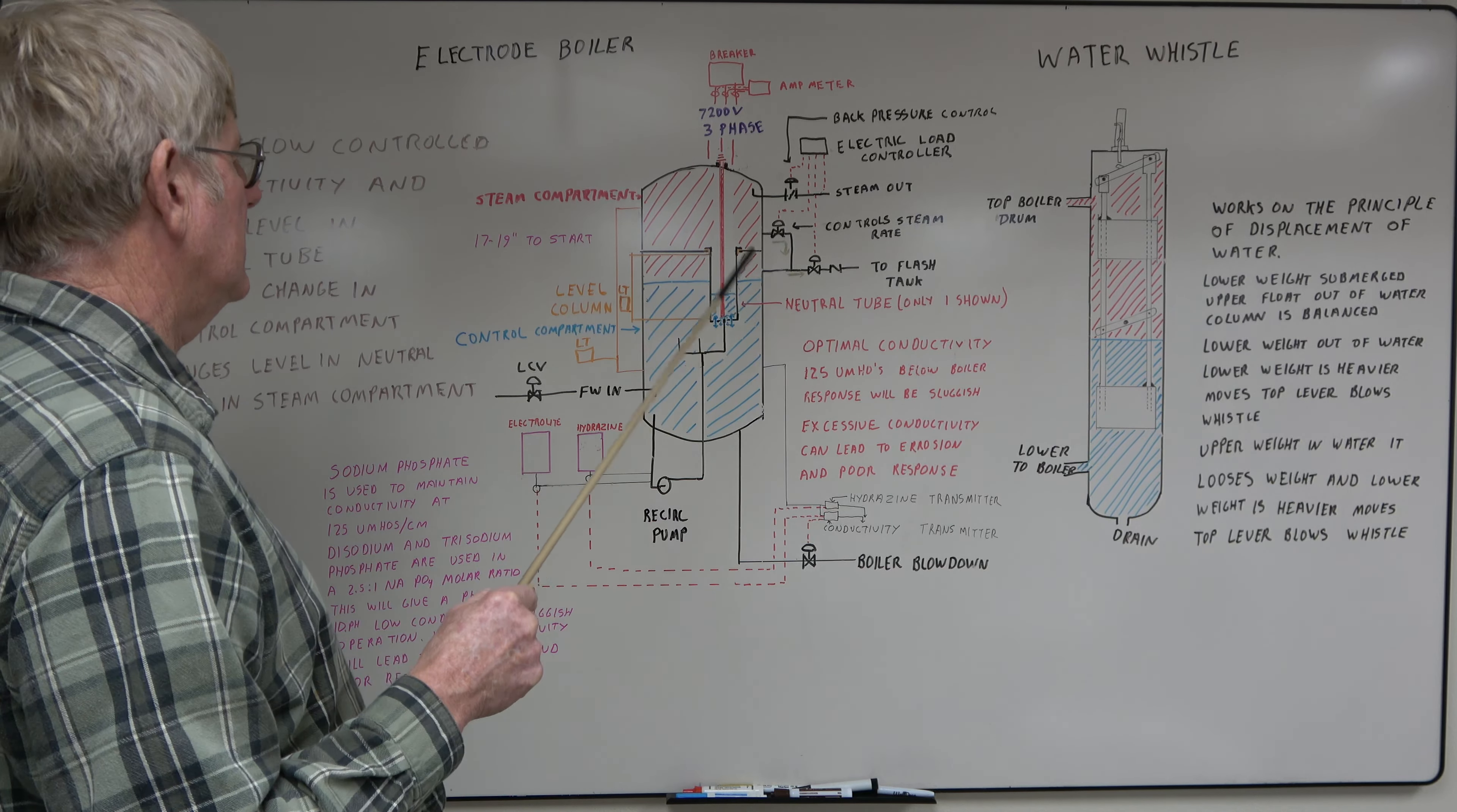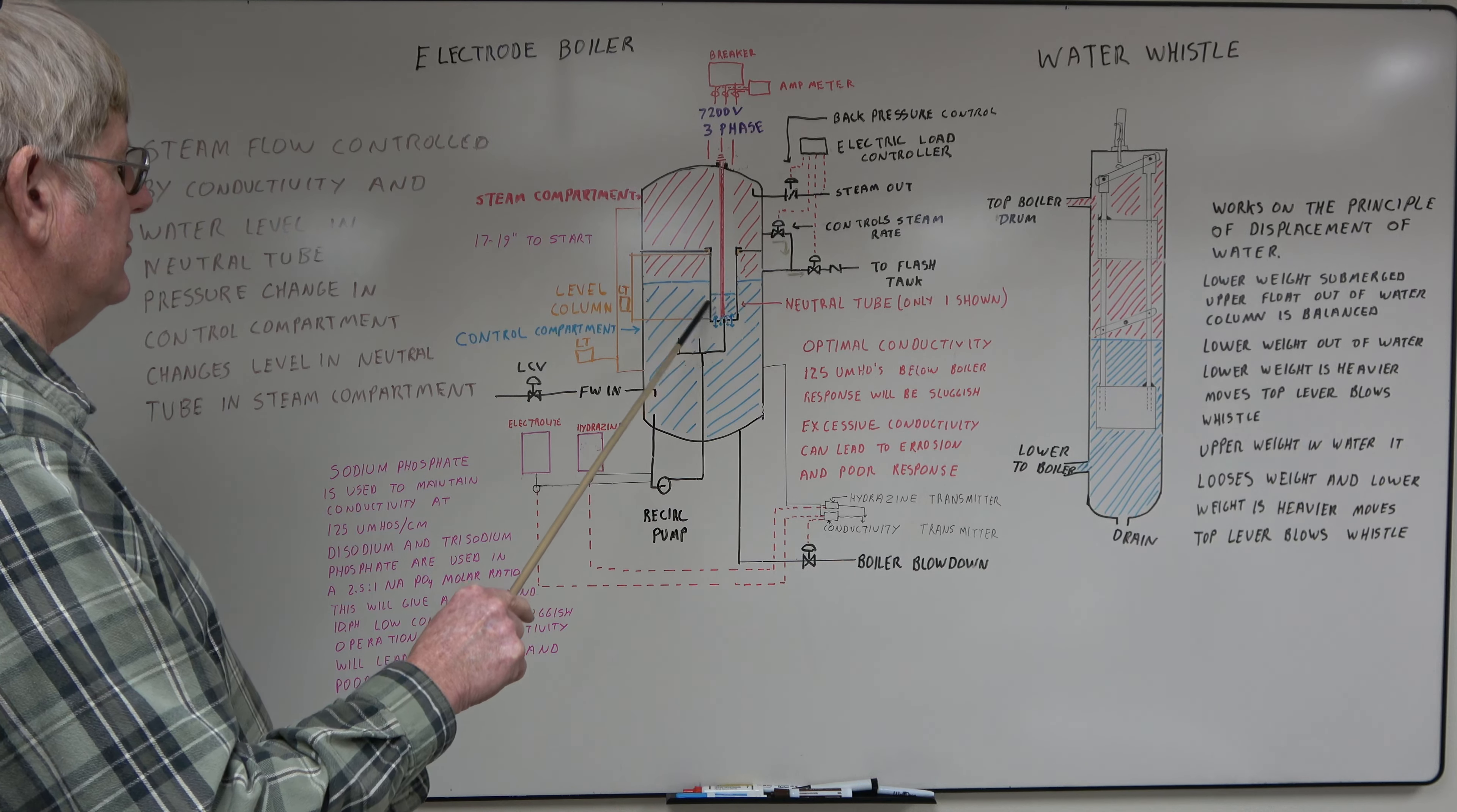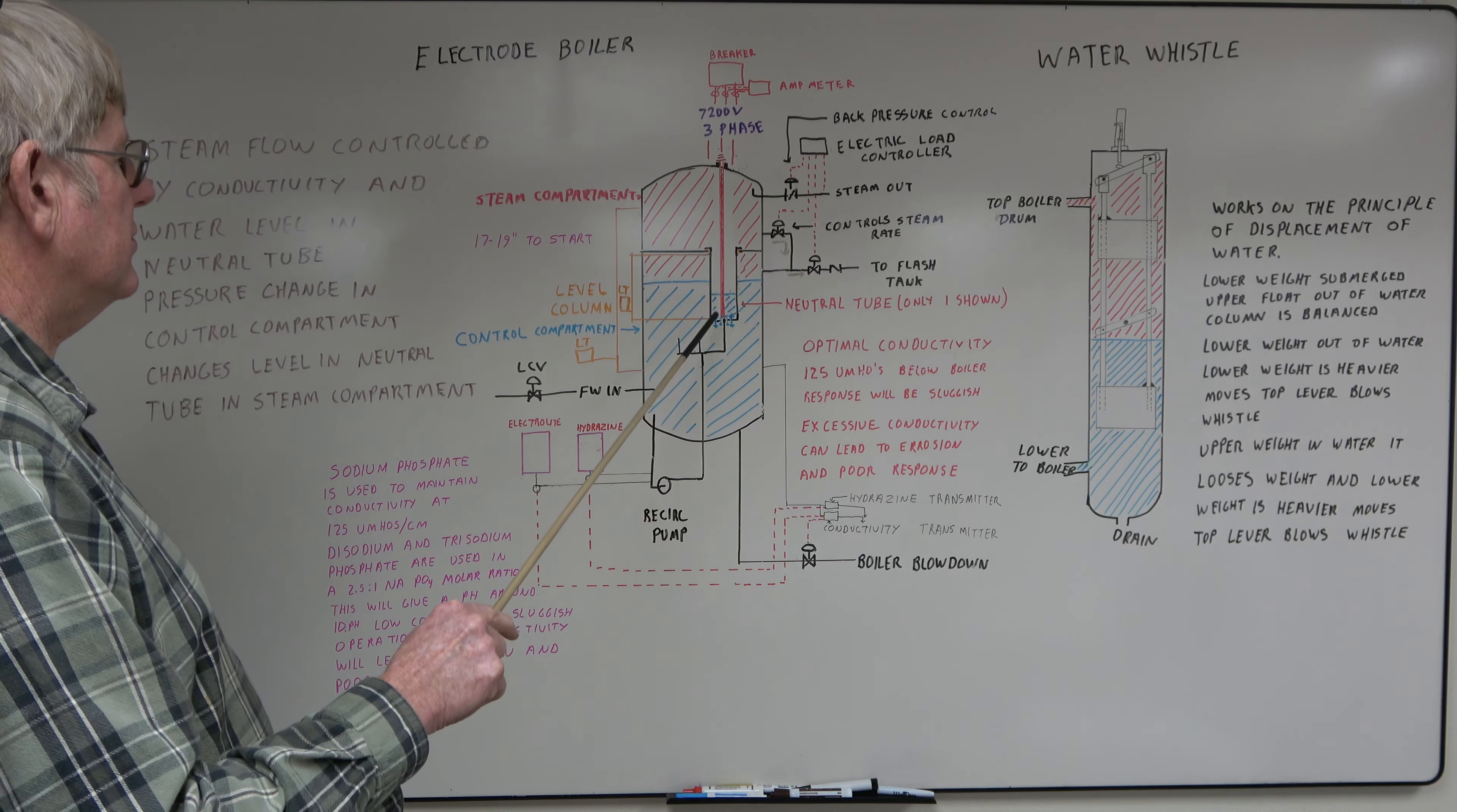You have a recirc pump. Basically the feed water comes in here. Your recirc pump picks up the cooler water. And each neutral tube has a water jet just to maintain water flow through here. There are holes in the bottom plate to allow water to move through, yet keep the stray currents from coming out through the boiler.